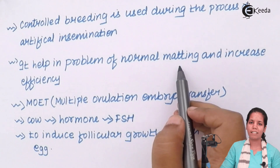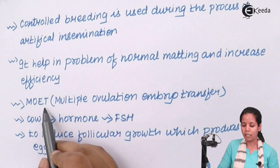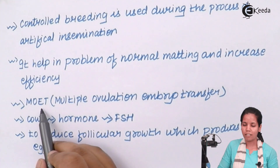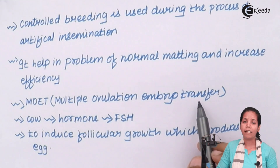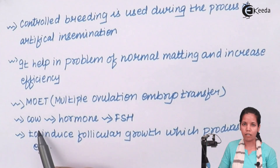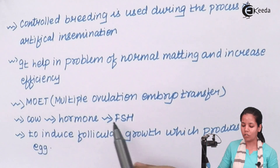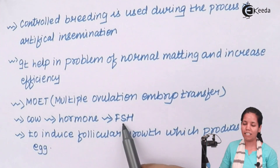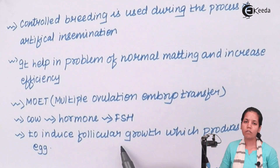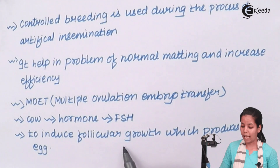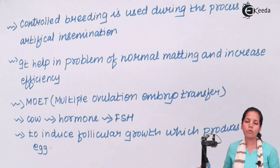A process called MOET — Multiple Ovulation Embryo Transfer — is also used. A cow is taken and injected with FSH, follicle stimulating hormone. This hormone induces the follicular cells of the ovaries, which further produces eggs.